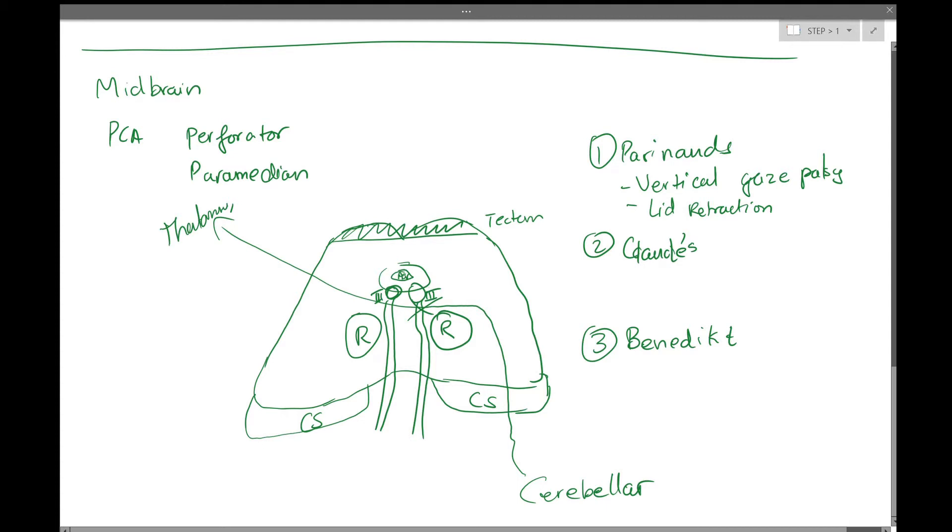But Claude's syndrome is basically a lesion right here, avoiding the red nucleus, but getting these cerebellar fibers, along with cranial nerve three. So the most important things here to remember will be contralateral ataxia, along with ipsilateral cranial nerve three palsy.